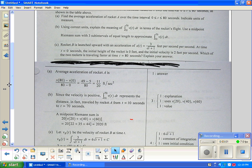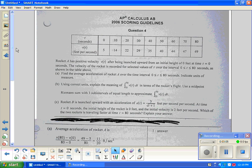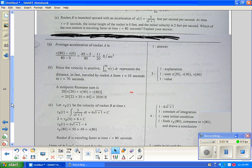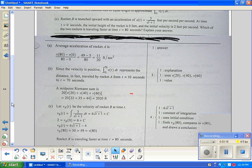And the initial velocity is two feet per second. Which of the two rockets is traveling faster at time of eighty seconds? Well, we know how fast rocket A is going. Rocket A, you guys agree, is going forty-nine feet per second. So we just gotta figure out how fast is rocket B traveling at eighty feet.